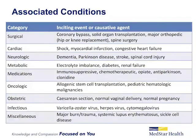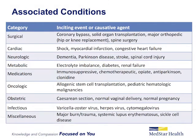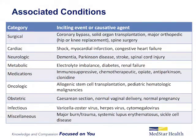Oncologic abnormalities include allogeneic stem cell transplantation, pediatric hematologic malignancies, and others. Obstetric-related conditions include cesarean section, normal vaginal delivery, and normal pregnancy. Infectious-related issues could include varicella zoster virus, herpes virus, and cytomegalovirus. Other miscellaneous conditions that are associated include major burn and trauma, systemic lupus erythematosus, and sickle cell disease.